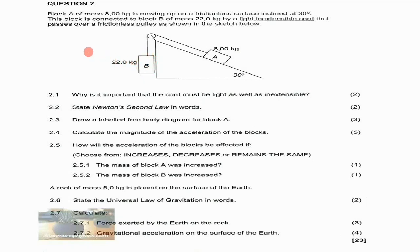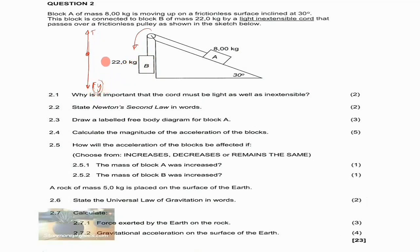For Block B's free body diagram, we indicate the gravitational force downward and tension upward. The gravitational force is larger than the tension because the bigger mass of Block B drives the system downward — the fg is greater than the tension, causing the system to accelerate downward.